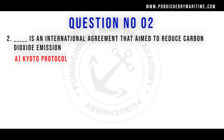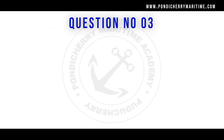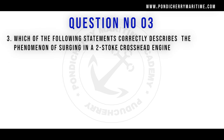Second question: Which is an international agreement that aimed to reduce carbon dioxide emissions? Option A: Kyoto Protocol. Option B: Paris Agreement. Option C: Montreal Protocol. Option D: All of the above. The correct answer is Option A, Kyoto Protocol.